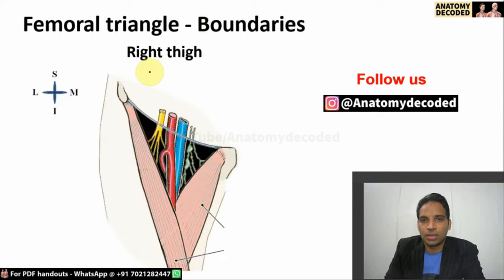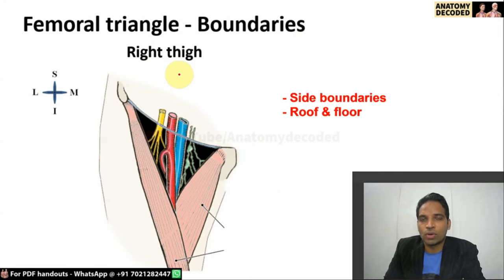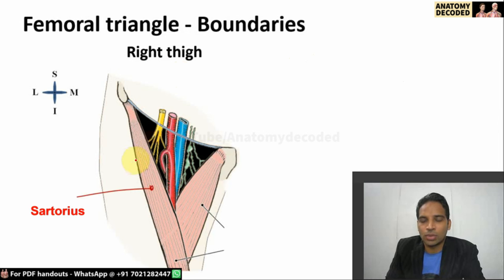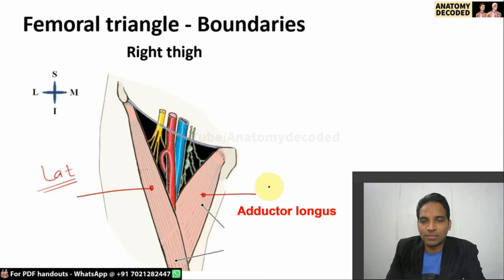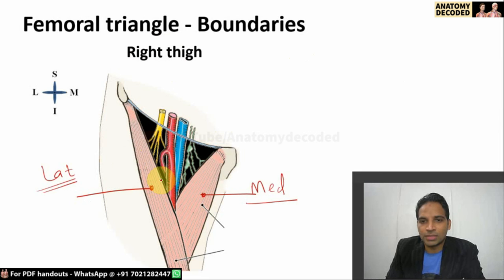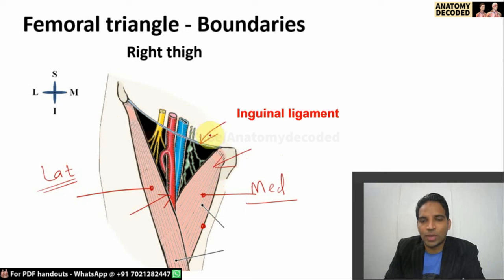For the side boundaries, the sartorius muscle forms the lateral boundary and the adductor longus muscle forms the medial boundary of the femoral triangle. Specifically, it is the medial border of sartorius and the medial border of adductor longus that form these boundaries. The base is formed by the inguinal ligament, which extends from the anterior superior iliac spine to the pubic tubercle.